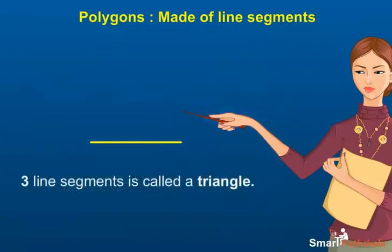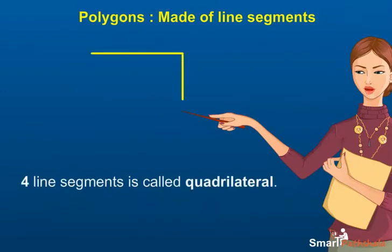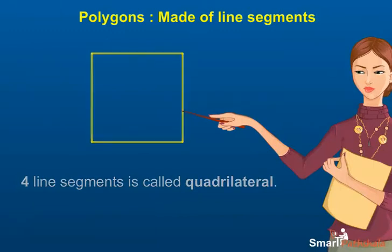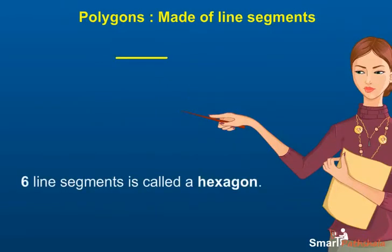A polygon with three line segments is called a triangle. A polygon with four line segments is called a quadrilateral. A polygon with five line segments is called a pentagon.